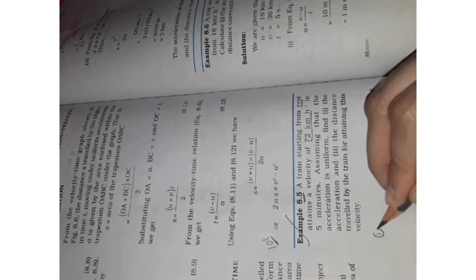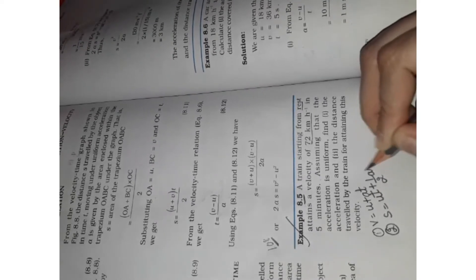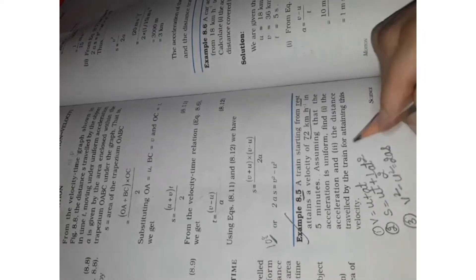The first formula is v equals to u plus at. The second formula is s equals to ut plus half at square. The third one is v square minus u square equals to 2as. These are the three formulas that we have to do on basis.